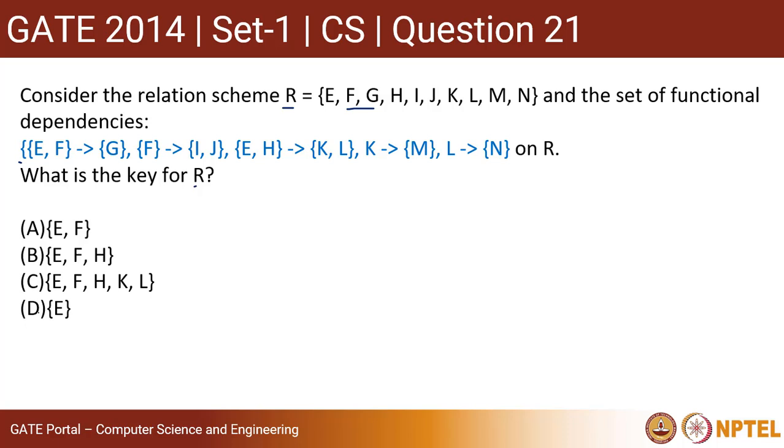The easiest way is to take each option and try to find out its closure. If the closure includes all the attributes, that's basically the key. And it has to be minimal also, because if it determines everything, it is a super key, but the minimal of a super key is a key.